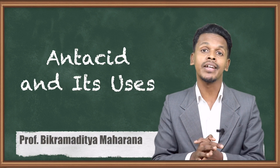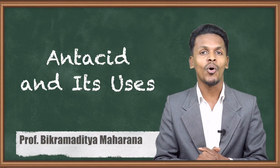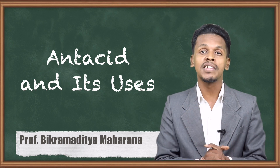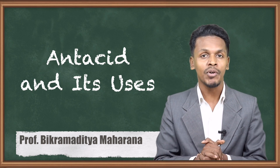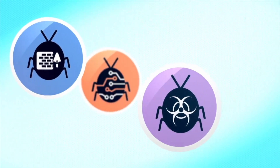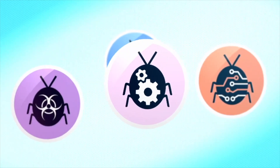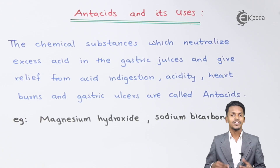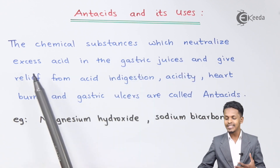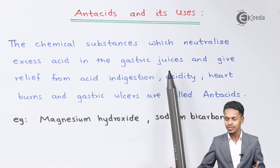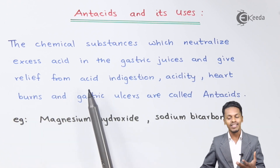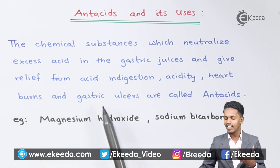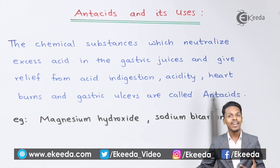In the previous topic we discussed about the anti-fertility drug, and now in this topic we are going to talk about antacids. So what are antacids and what are the uses of them? The chemical substance which neutralizes the excess acid in the gastric juices and gives relief from acid indigestion, acidity, heartburns and gastric ulcers are called antacids.